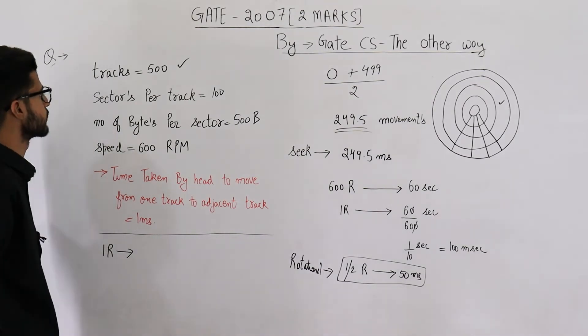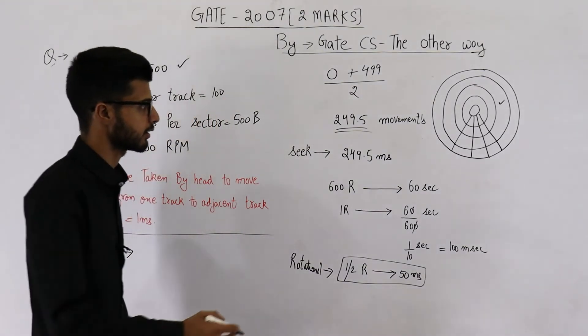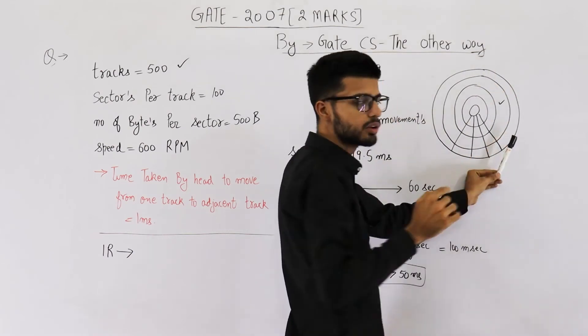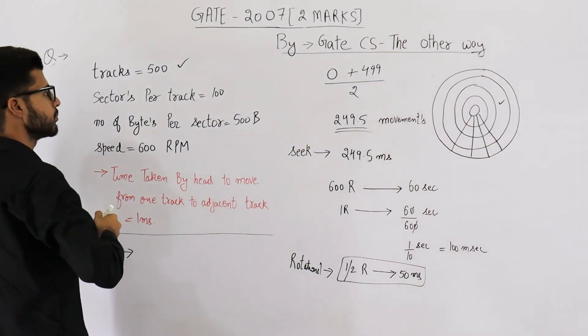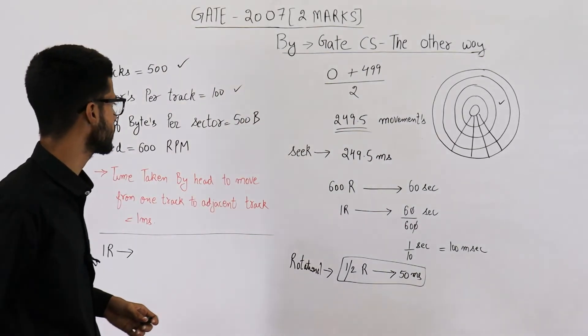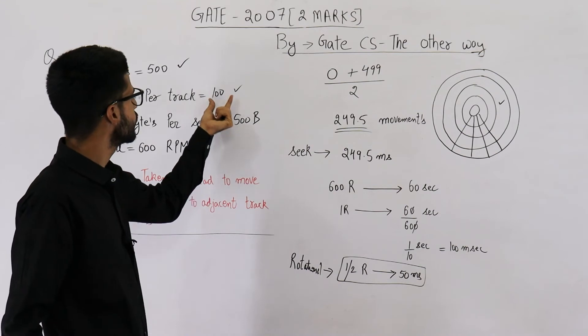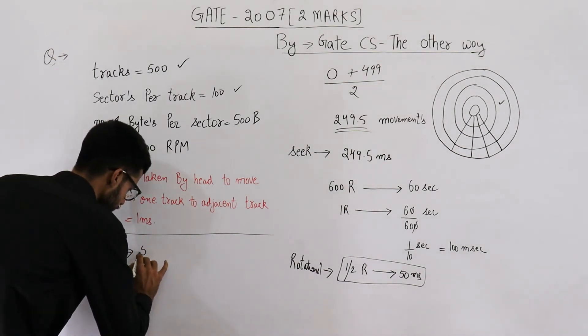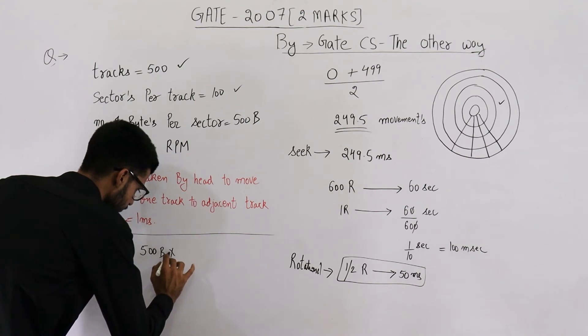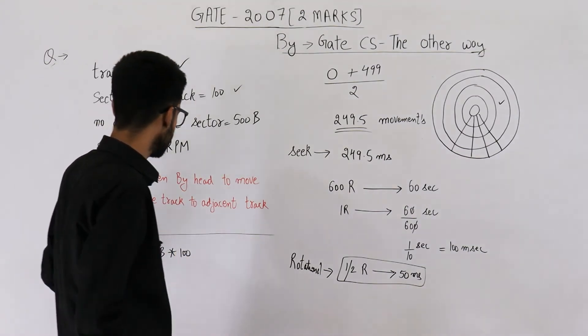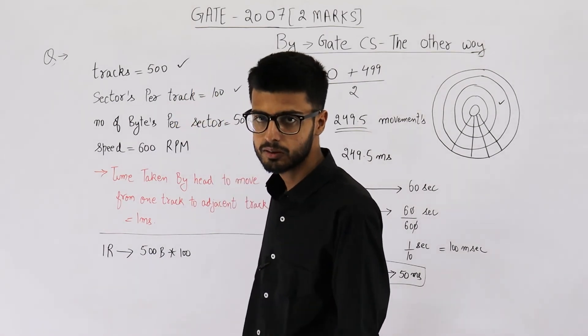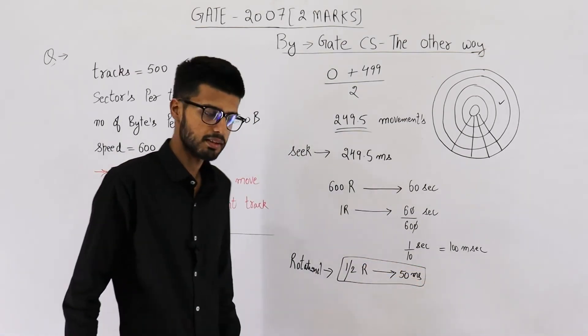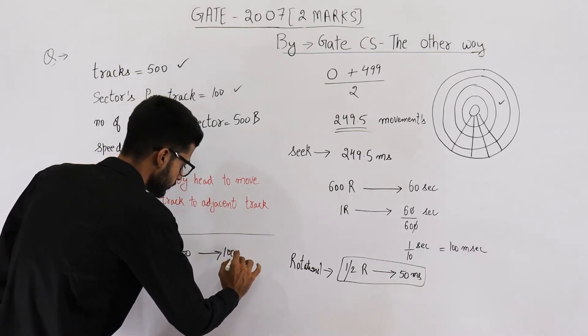One rotation means we are transferring everything from an entire track. Say your head is here, it's pointing here. After one complete rotation, you will read the entire track. Reading entire track means reading 100 sectors. Reading 100 sectors means reading 100 into 500 bytes, because each sector is 500 bytes. So in one rotation, you can read this much of data. This also means in 100 milliseconds, you can read this much of data, because one rotation takes 100 milliseconds.